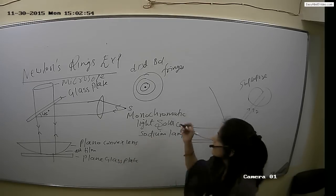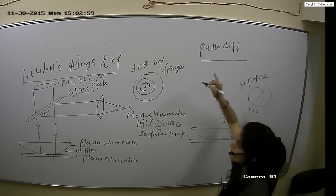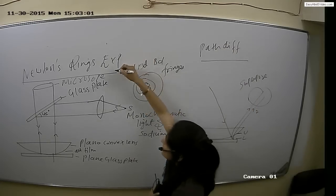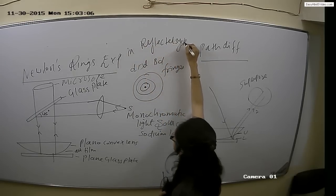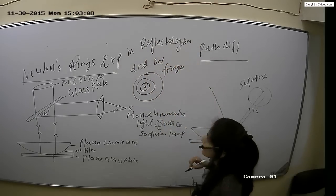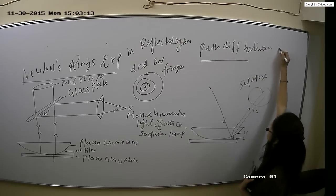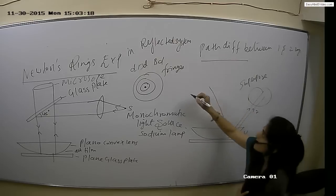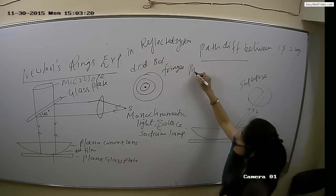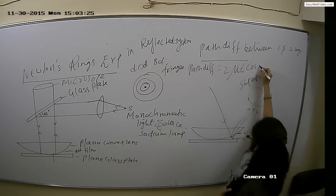Next, we need to calculate the path difference. We are studying Newton's rings experiment in reflected system. The path difference in a reflected system is given by 2μT cos R plus λ/2.